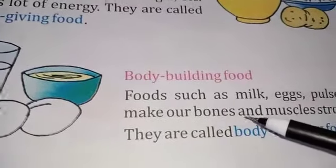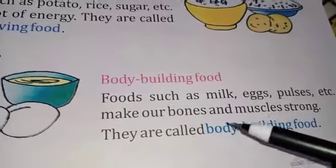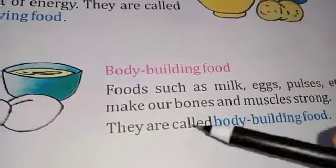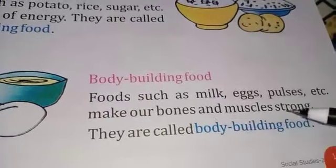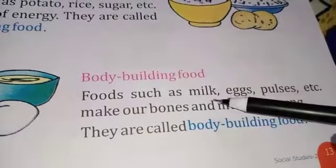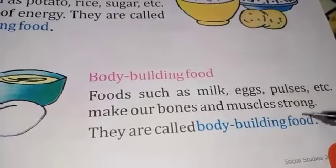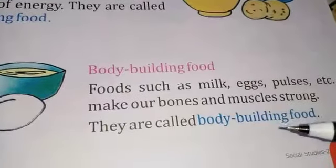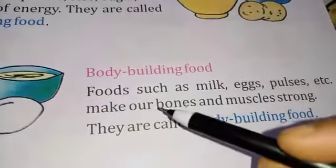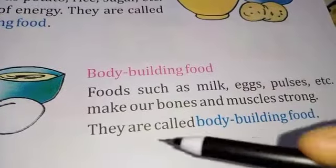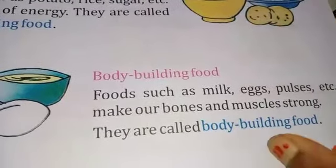The second group is body-building food — यानि शरीर का निर्माण करने वाले भोजन। Foods such as milk, eggs, and pulses make our bones and muscles strong and help us grow. Therefore they are called body-building food.